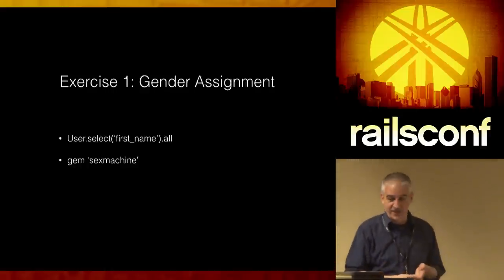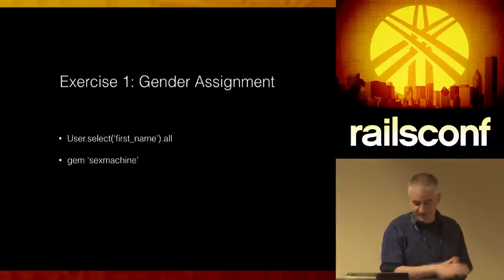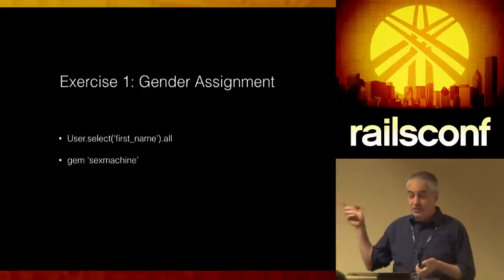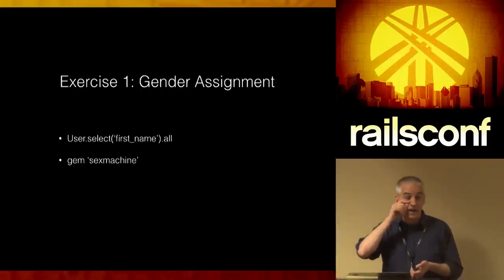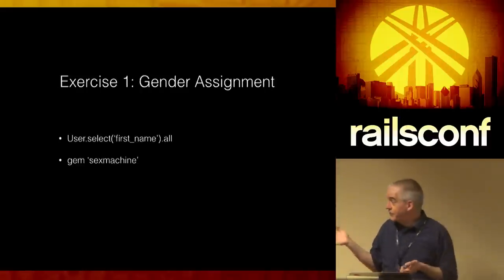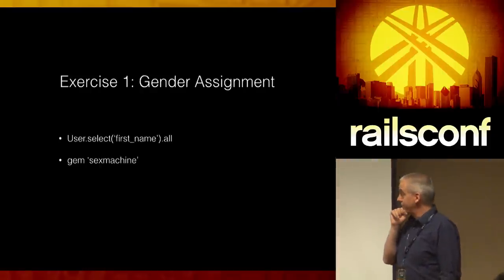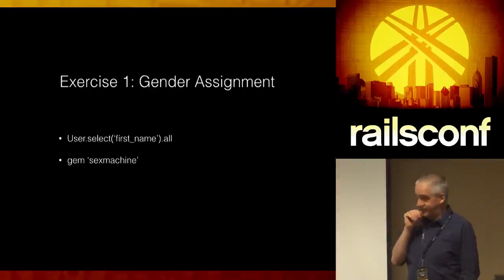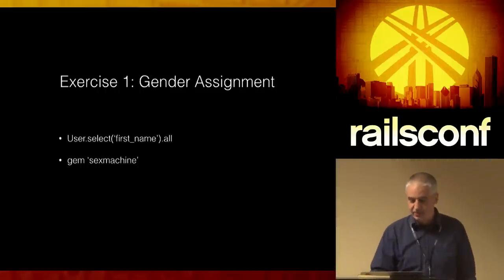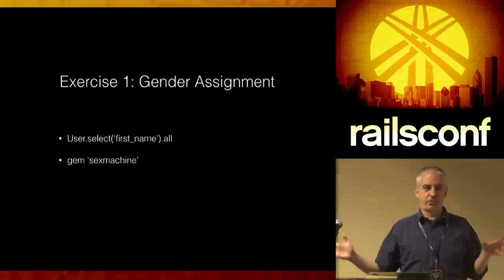So let's talk about it. This is one of the first examples we're going to do. The first two I know you can do without any crazy gems or linear algebra. The gem is called sex_machine — I did not write it. Literally the code is: select all your users by first name, take the sex_machine gem, and analyze it. How many people have got gems installed so far?